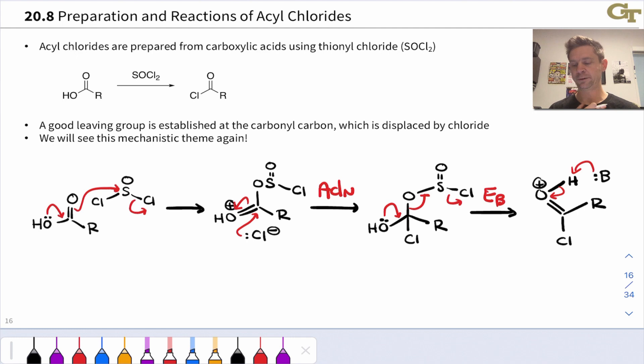In the final step of the mechanism a base removes the proton from the carbonyl oxygen and we end up with the acyl chloride. This is all centered on turning that OH group in the carboxylic acid ultimately into a good leaving group and the ultimate things that leave are SO2 which is a gas and a chloride anion from SOCl2. This is how we make acyl chlorides from carboxylic acids.